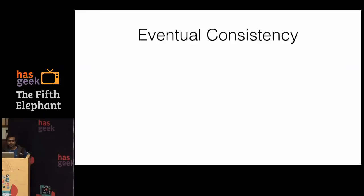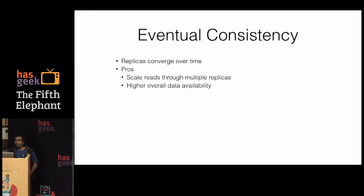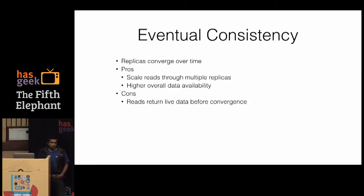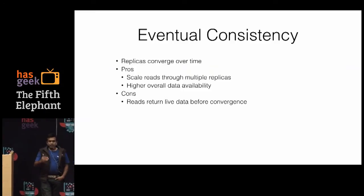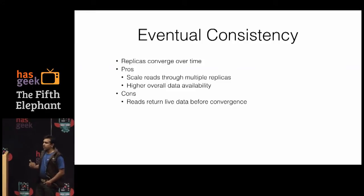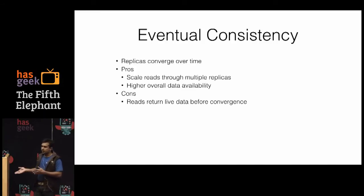Eventual consistency simply says that if you have multiple replicas of data, they converge over time. It doesn't time-bound it in any way. The pros: you can scale reads through multiple replicas, and it gives higher overall data availability even if some replicas fail. The cons: reads return stale data before convergence. Because replicas can be at various stages of convergence, they return data only up to what they've seen. A user might see value X from one replica, then on the next request see a different value from another replica.